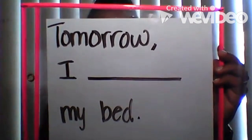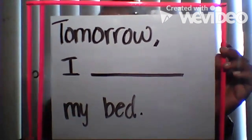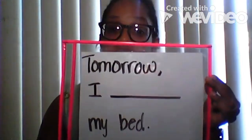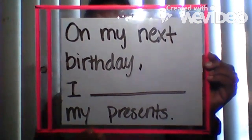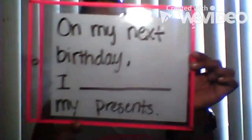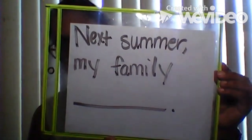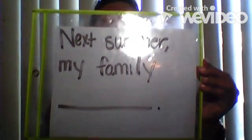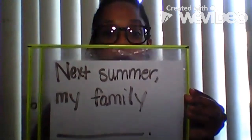Take a look at these sentences and, remembering the word that makes it future, I want you to read the sentence out loud and fill in the blank with a future tense verb. Here's the first one. Did you say tomorrow I will make my bed? That's okay, as long as you said tomorrow I will something — your bed or my bed. What about this one? On my next birthday, I will open my present. Hopefully you said something with will in front of the verb. Last one. Next summer, my family will travel. Hopefully you said something with the word will in front of it.